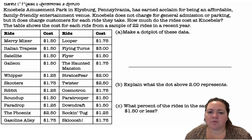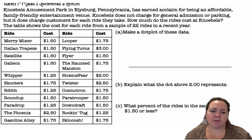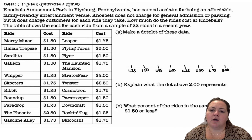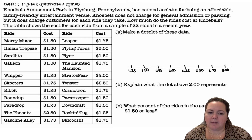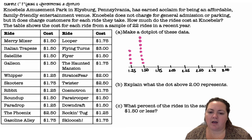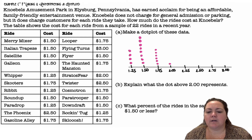When you're making a dot plot from scratch you probably want to look and see what's your smallest value and what's your largest value. Our lowest cost is $1.25 and the highest cost is $3. So I'm going to count by quarters from $1.25 all the way up to $3. I have four for $1.25, eight for $1.50, six for $1.75, one at $2, one at $2.50, and one at $3.